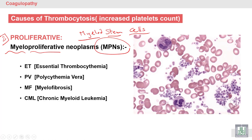Myeloid stem cells are responsible for more production of platelets. We can see increased platelet count in idiopathic or essential thrombocythemia. Essential thrombocythemia is an increase in platelets without a secondary cause, so it is called essential or sometimes idiopathic thrombocythemia.